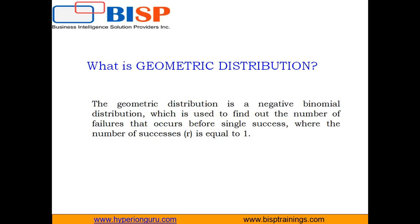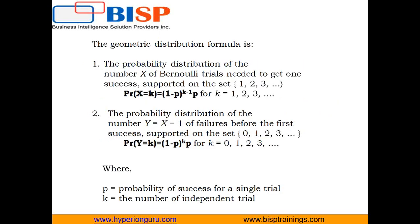The geometric distribution is a special case of the negative binomial distribution. The negative binomial distribution models the number of trials required to obtain n successes, and n is not required to equal one. In probability theory and statistics, the geometric distribution can refer to either of two distinct probability distributions.